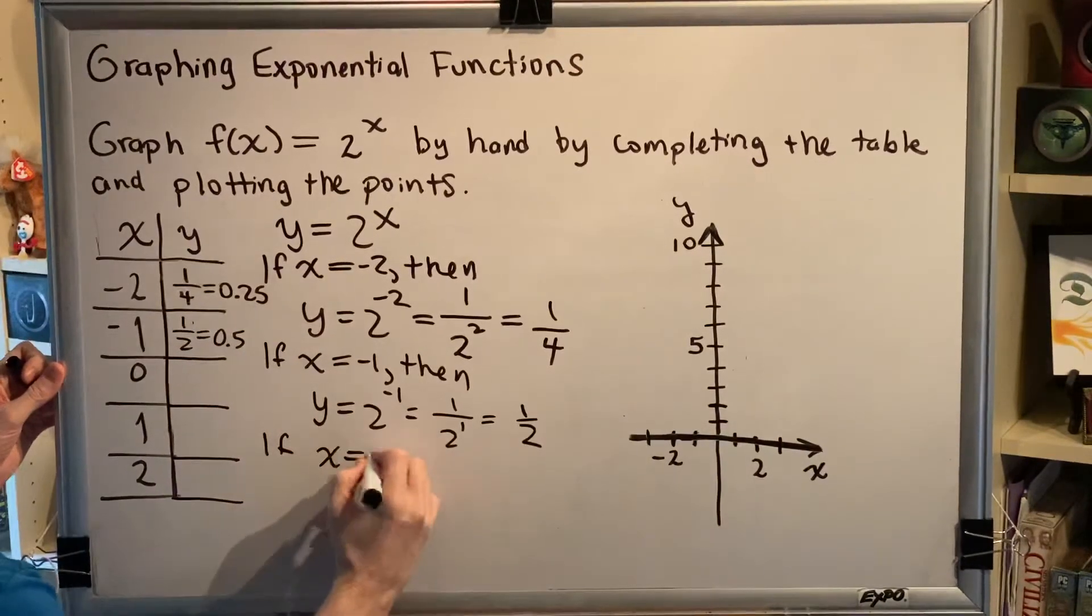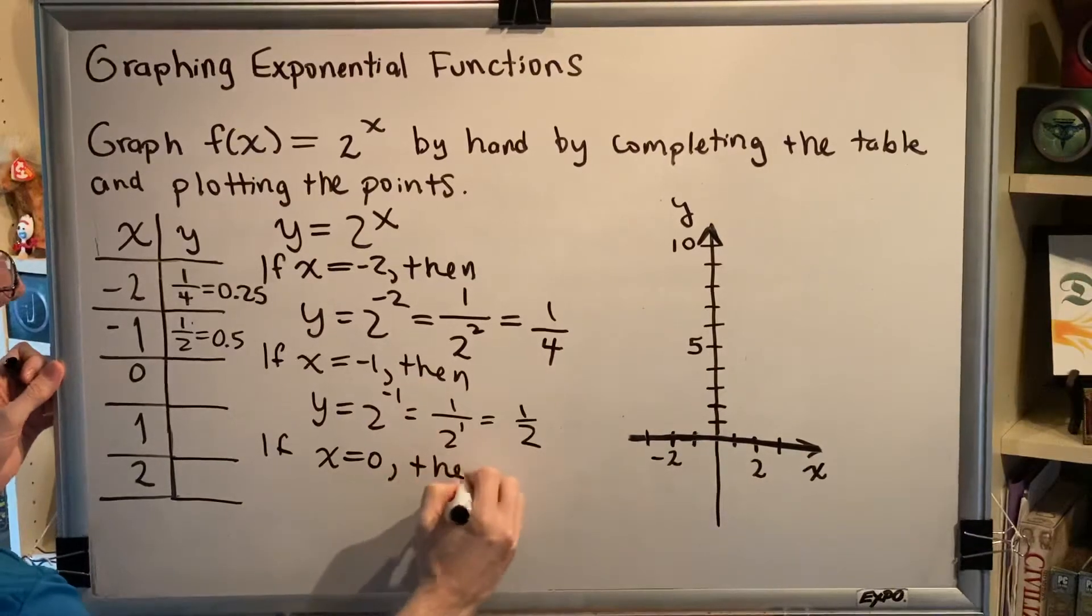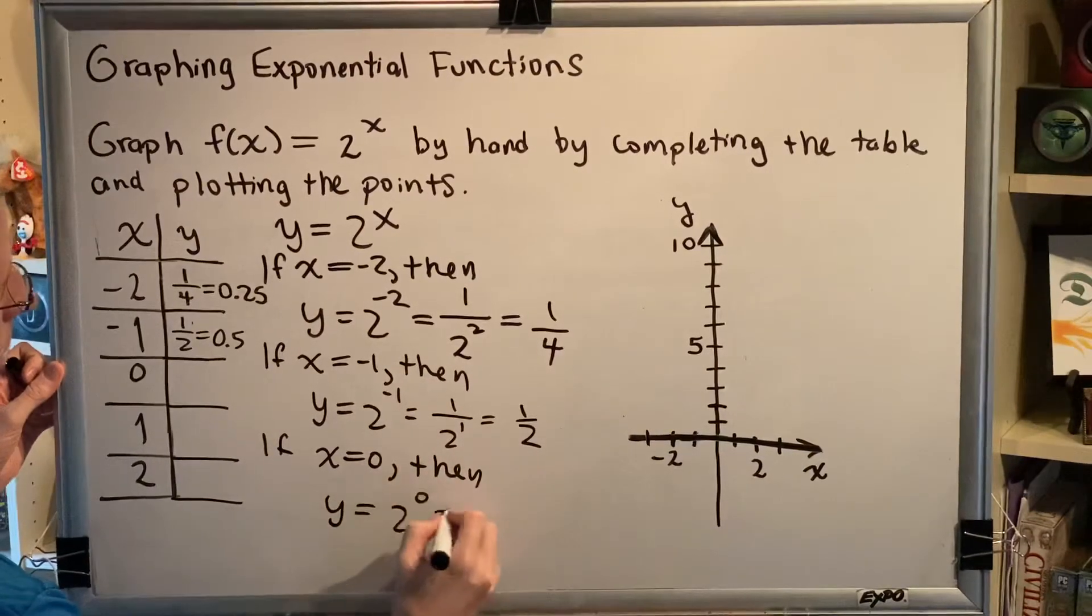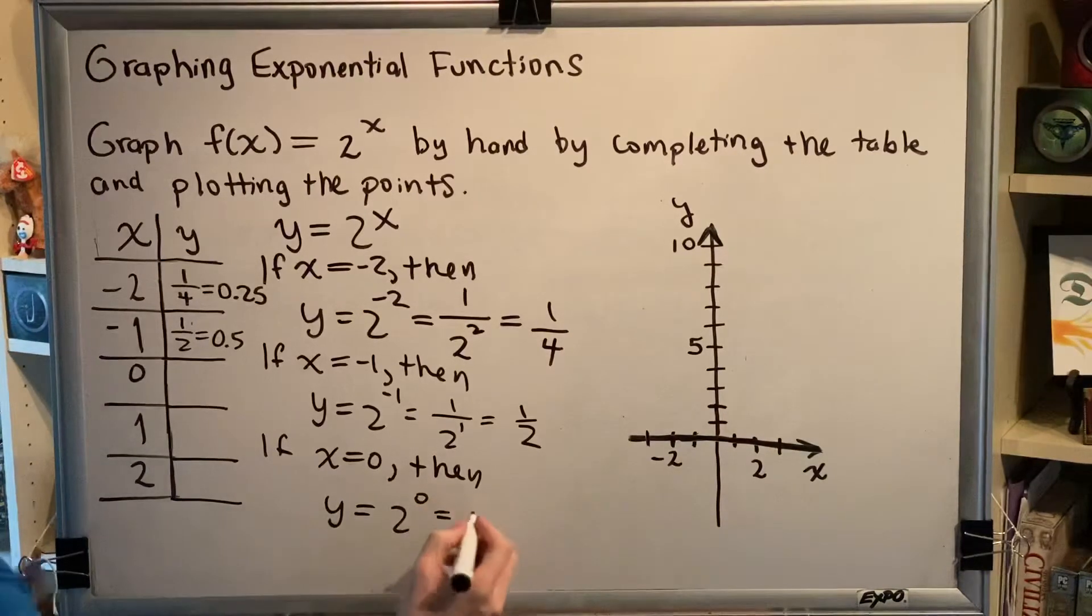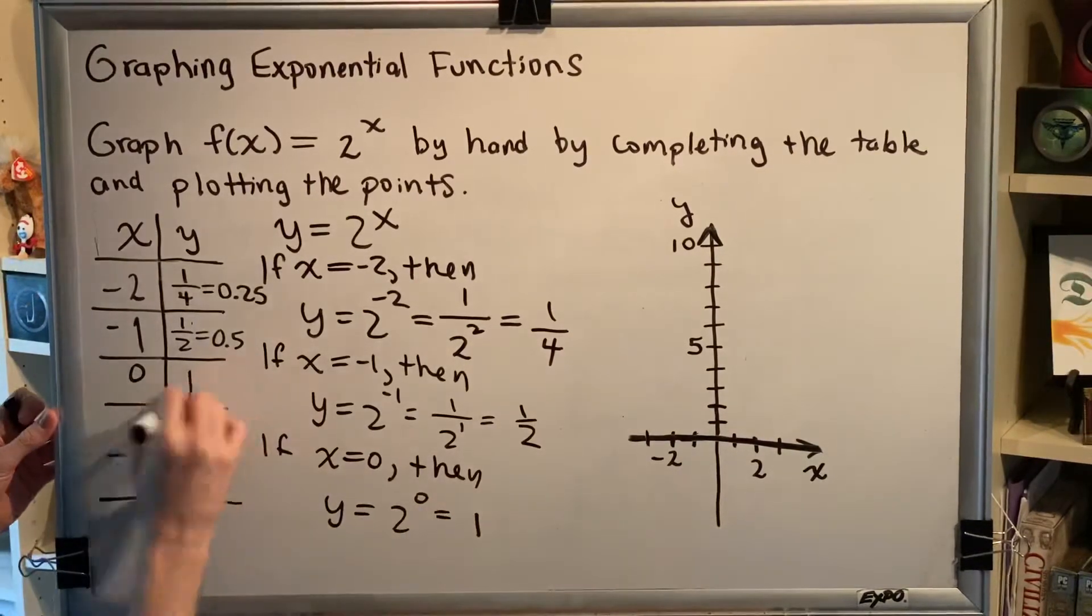If x = 0, then y = 2^0. Any non-zero number raised to the 0 power equals 1, so we get 1.